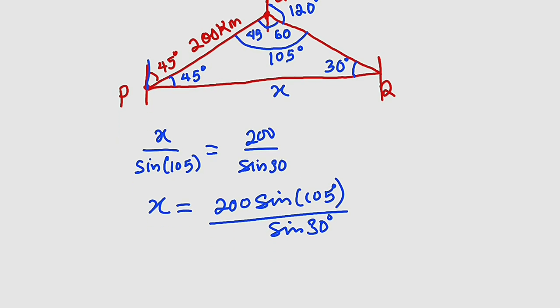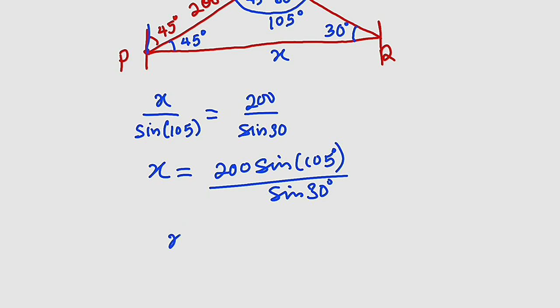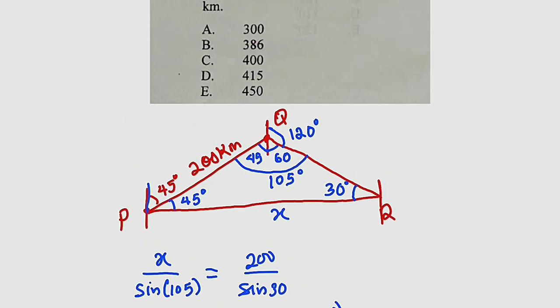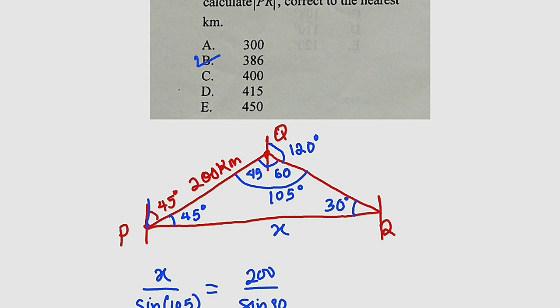So let me use my calculator and press everything. X is equal to 386 because they say to the nearest kilometer. So we have 386 kilometer, which is option B.